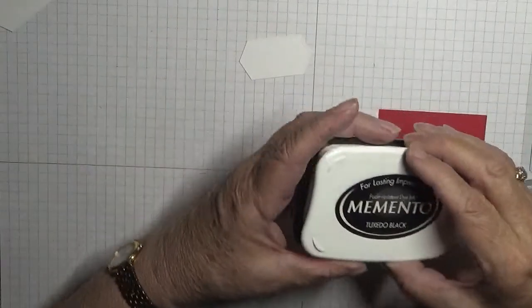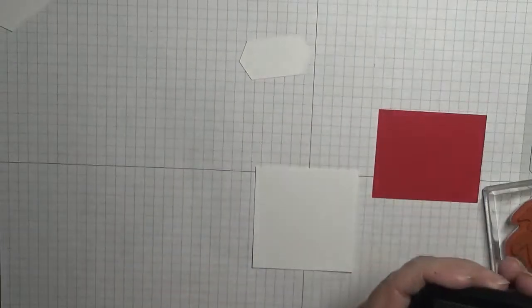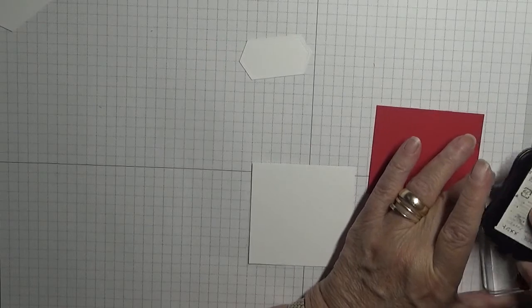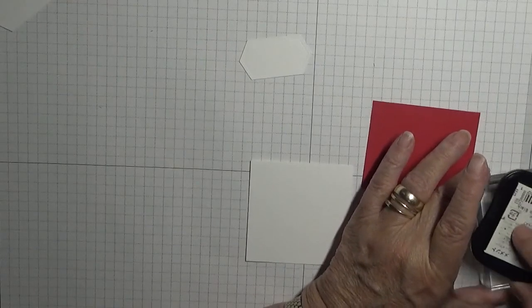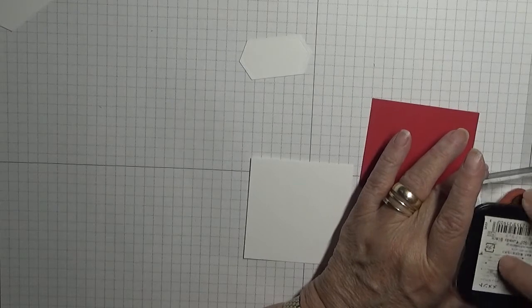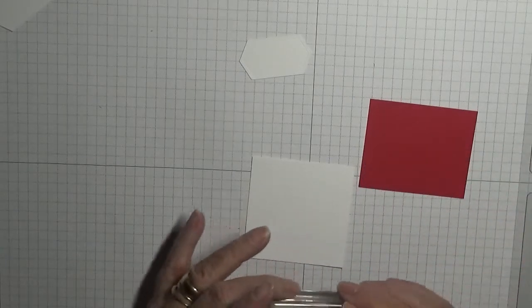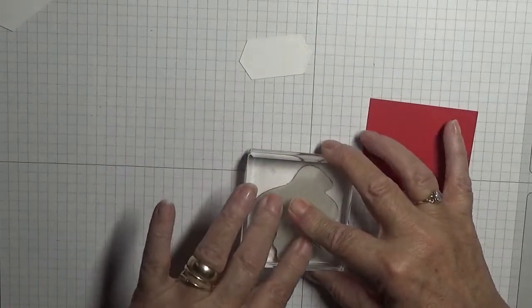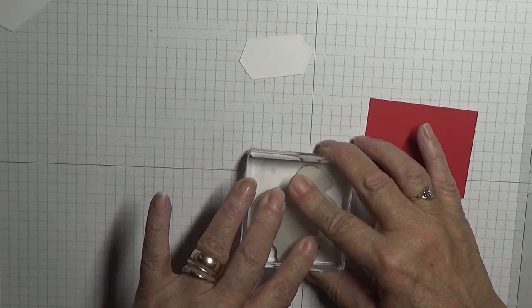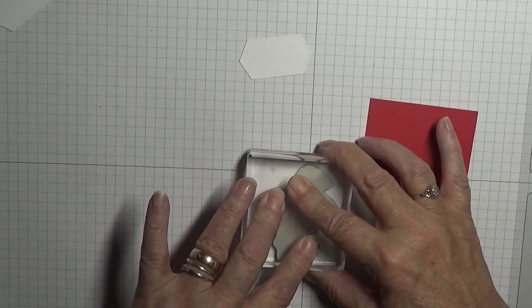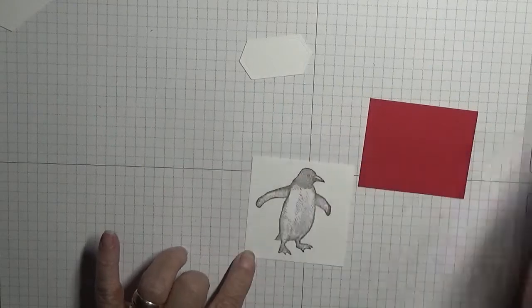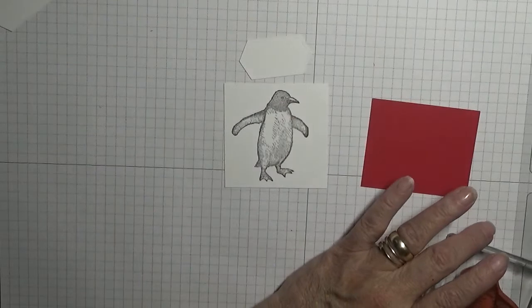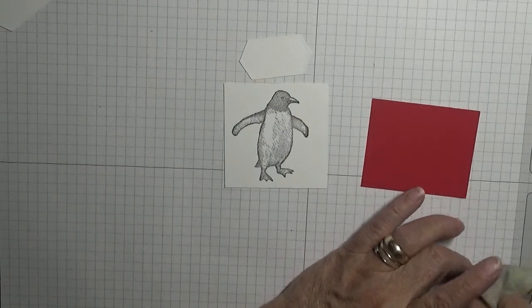First of all we'll do the penguin. I'm using Memento Tuxedo black for this, as I find using my Versafine for the penguin makes it really dark. So all I'm doing is really cute.